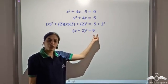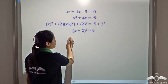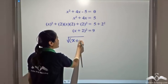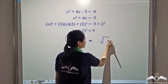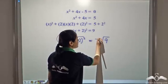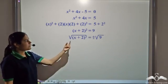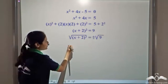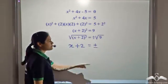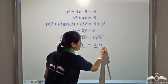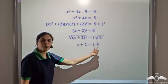Now the left hand side is a perfect square and the right hand side is a constant, so we can solve this by taking the square root of both sides. Taking the square root, root over x plus 2 whole square is equal to plus minus root over 9. Root over x plus 2 whole square is x plus 2, and root over 9 is 3. So x plus 2 is equal to plus minus 3.